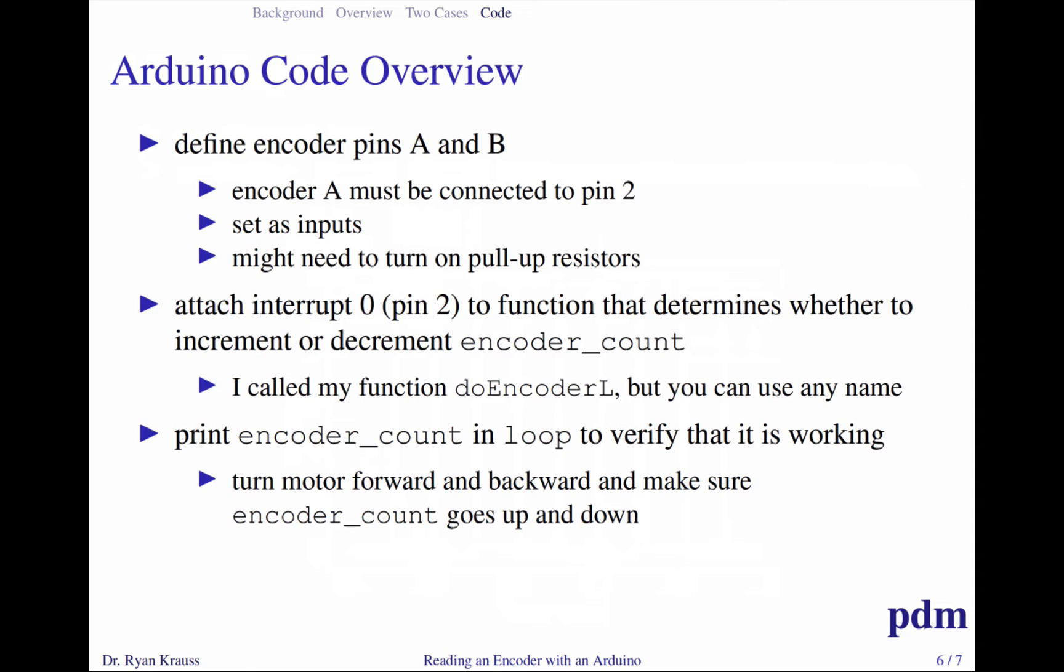For just the encoder on the left, which we're talking about here, I'm going to connect encoder A to pin two, and then encoder B could essentially be anything. Those are going to have to be set as inputs in my setup function, and then depending on the design of the encoder, I may also need to turn on the Arduino's pull-up resistors for the pins I'm connected to.